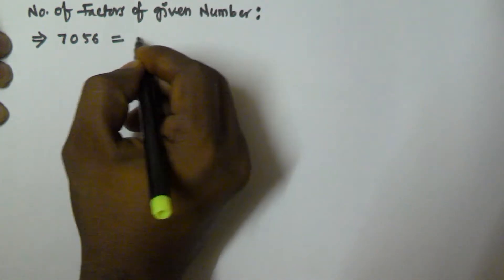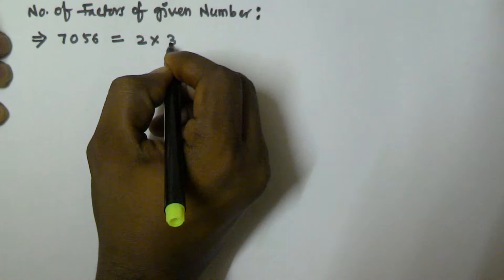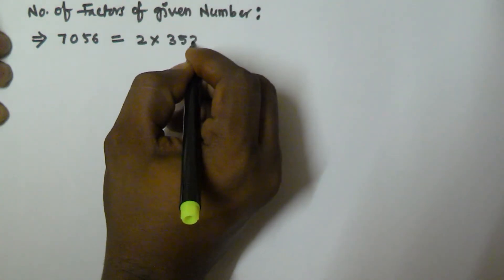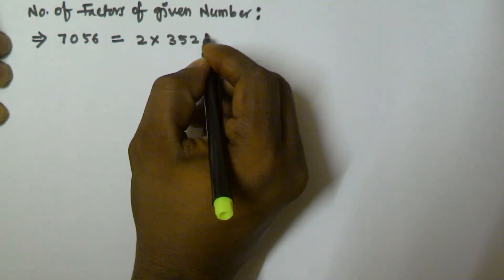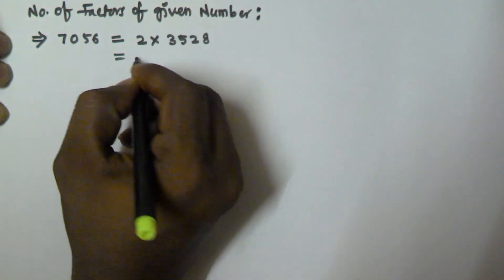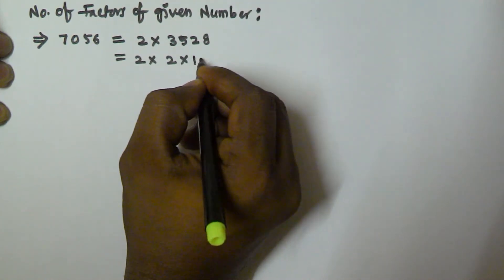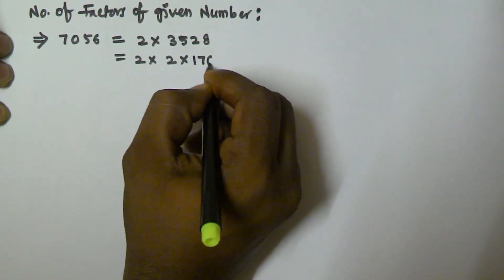So that is going to be 2 into 2, 2 times 2 times 2 times 2 times 2...